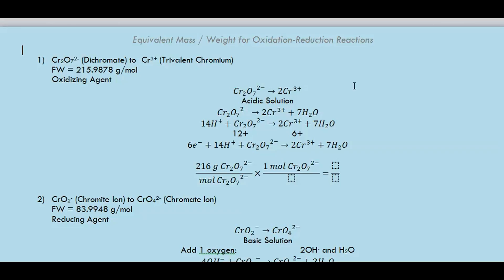To get the equivalent mass or weight, you need a reference oxidation-reduction reaction. For the oxidizing agent, for example, we go straight to this example: dichromate.